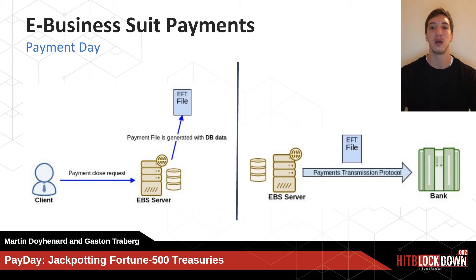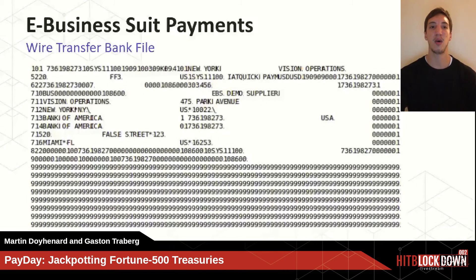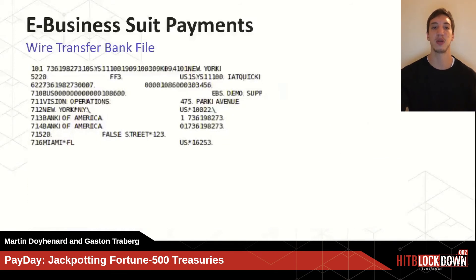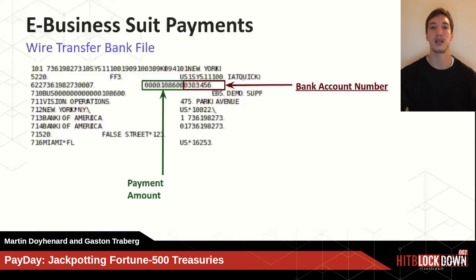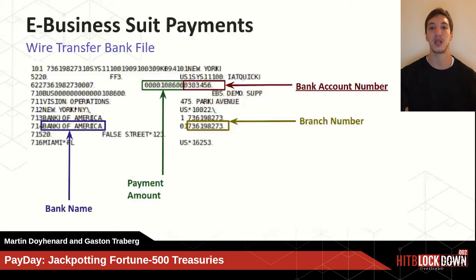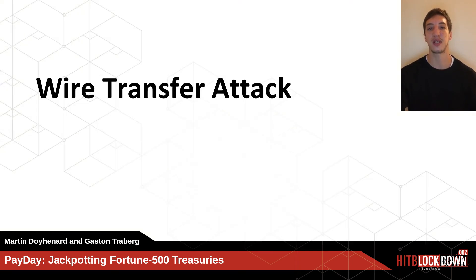This is how an EFT file looks. The fields we care about include the payment amount — the last two digits represent cents, so in this case it's $1,086 — the destination bank account number, the destination bank account name, and the bank branch name. After seeing this file, we need to understand how to modify it so the bank sends money to wherever the attacker wants.